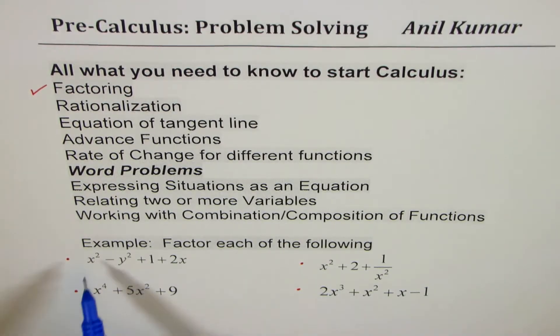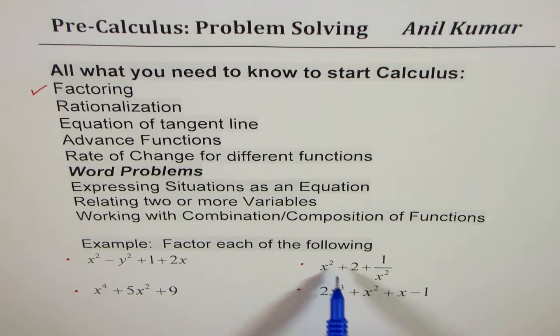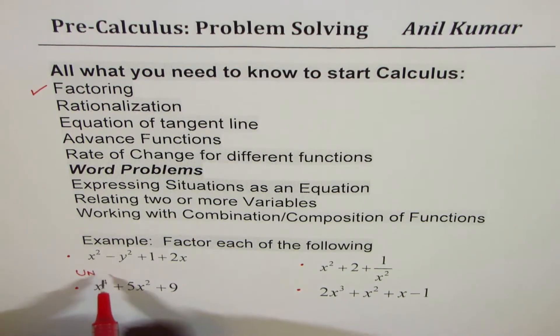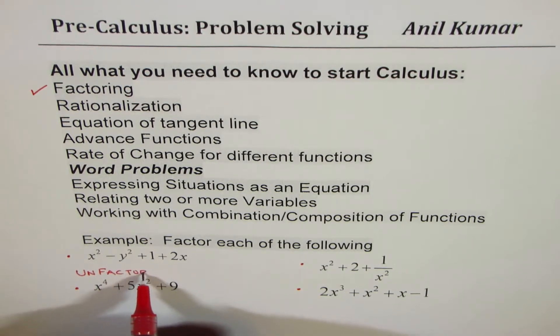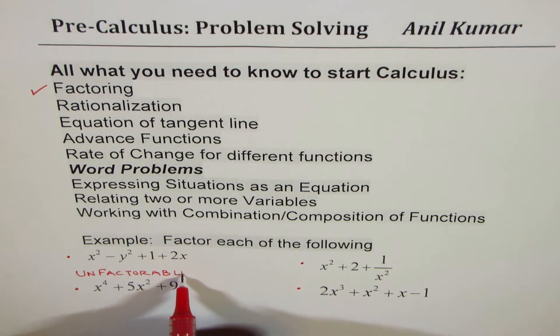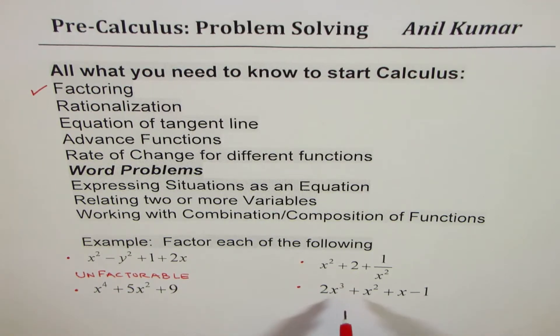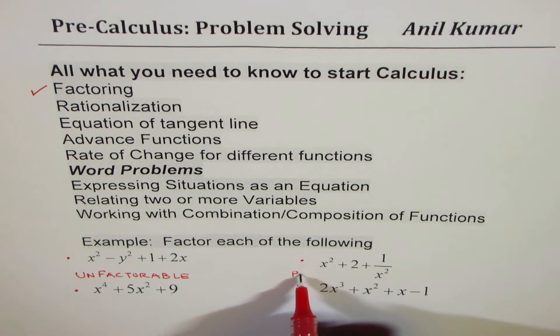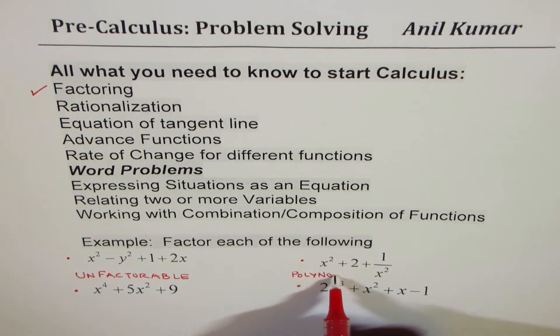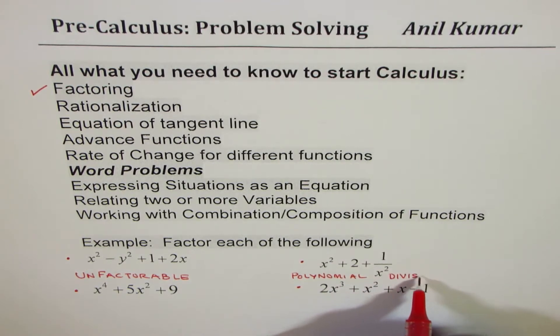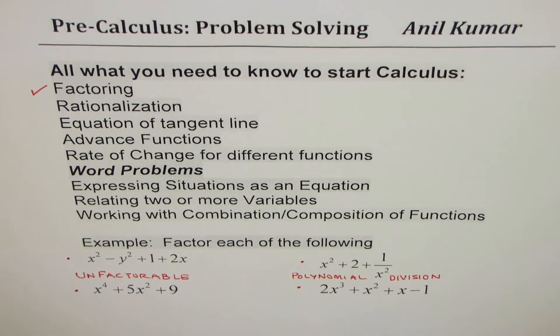So the four examples are: x² - y² + 1 + 2x, then we have x² + 2 + 1/x², then we have x⁴ + 5x² + 9, and the last one here is 2x³ + x² + x - 1. Let me tell you that this one which we have here is unfactorable, but we have a technique of factoring this and these techniques will really help you in calculus. And the last one here you need to use what you learn in polynomial division. So that's the variety which we have.